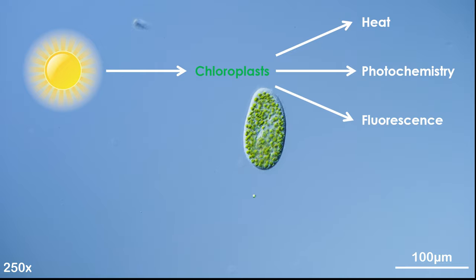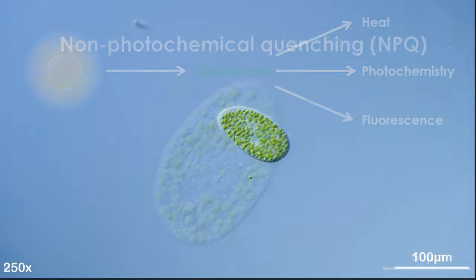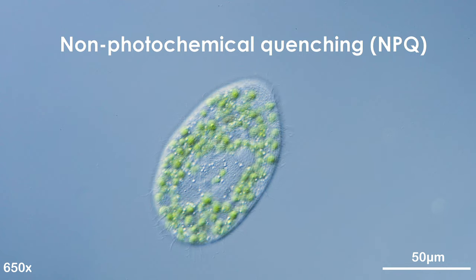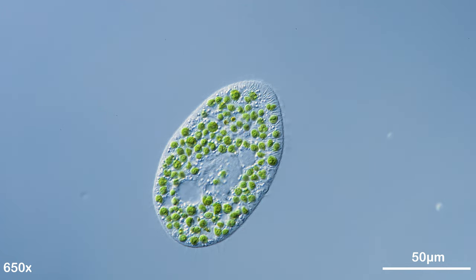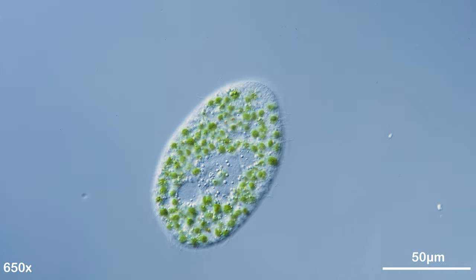Heat dissipation occurs through a process called non-photochemical quenching, which is a rapid mechanism using multiple molecular pathways to protect a cell. The best part for us microscopists is we can actually observe it using a fluorescence microscope.